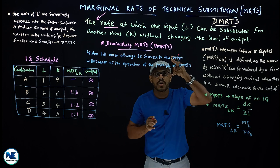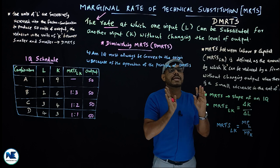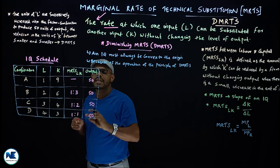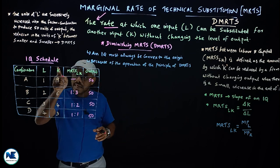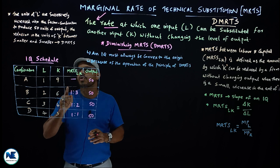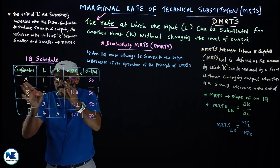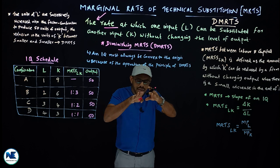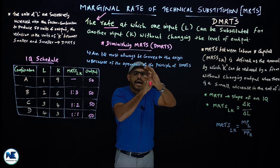This is the basic principle of the isoquant. On an isoquant, the different combinations — A, B, C, D — all produce the same level of output, say 50 units. So 50, 50, 50, 50 — the output is the same for each combination of labor and capital units.